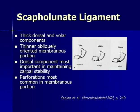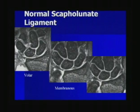Moving on to the scapholunate ligament: it's composed of three components — a thick dorsal and volar component and a thinner obliquely oriented membranous component. The dorsal component is the most important in maintaining carpal stability, and perforations are most common in the membranous portion, which is the thinnest.